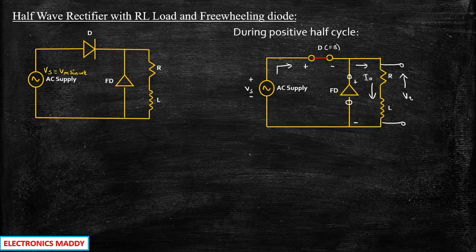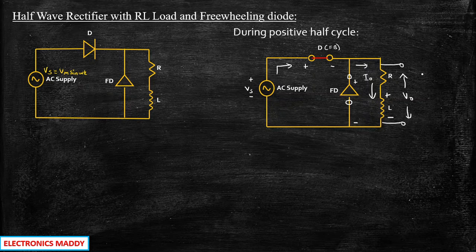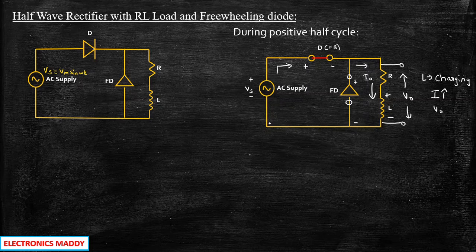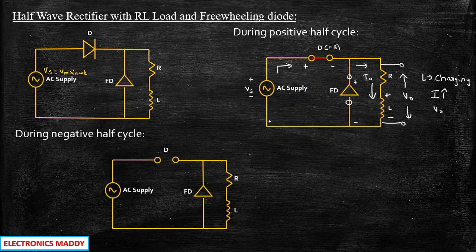During this process, the inductor slowly starts charging with polarity plus and minus. The current i is slowly increasing and vout is available at the output. Then, during the negative half cycle, the supply voltage goes negative.